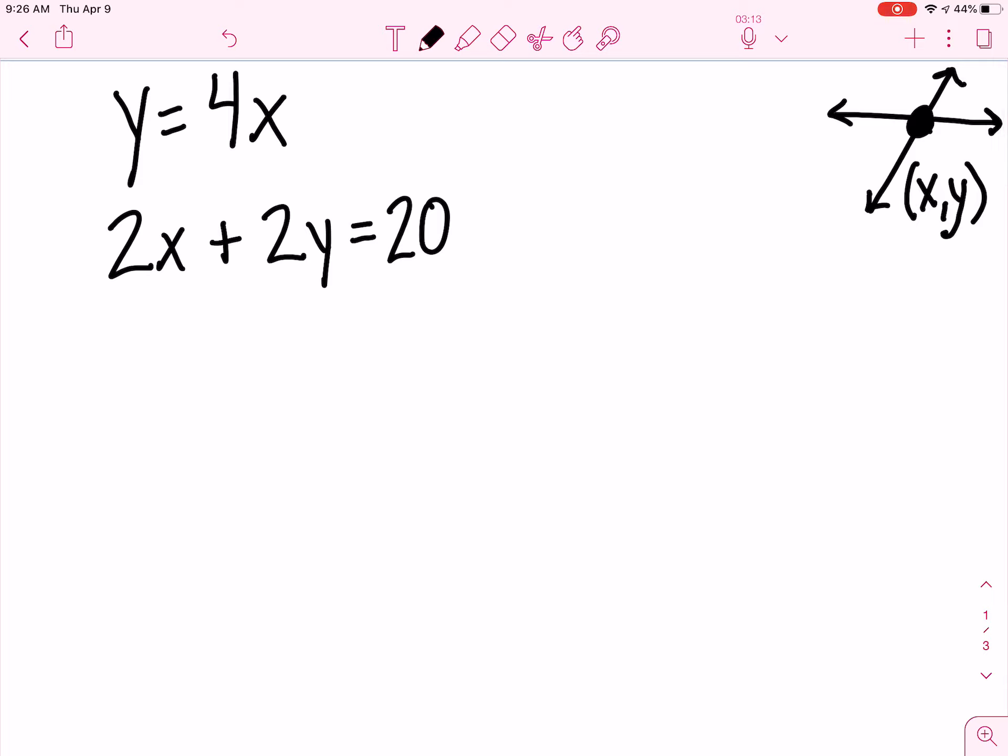So this is our system of equations, and they're going to cross one time at a coordinate point x comma y. So that is our goal, is to figure out what x comma y they cross at.